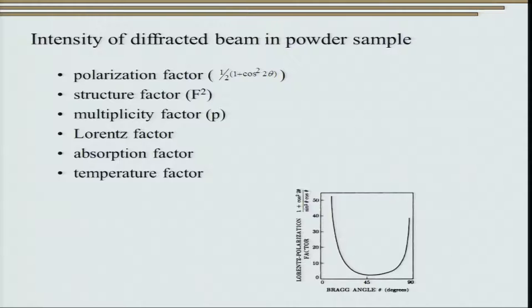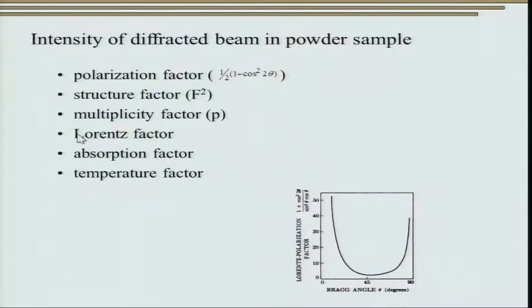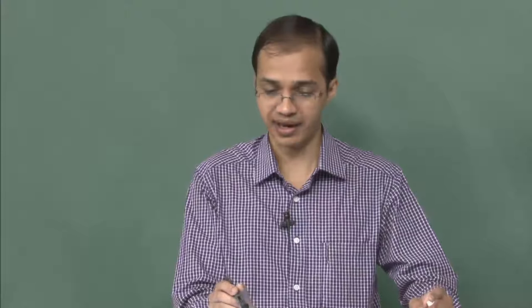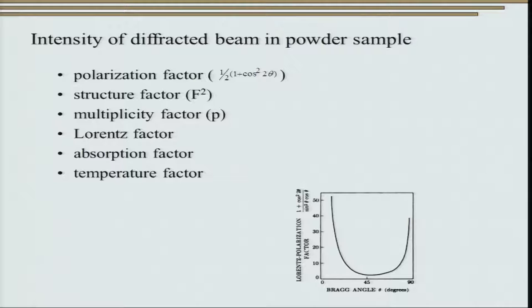Regarding multiplicity, consider the 100 peak and the 111 peak in cubic crystals. The multiplicity of the 100 peak is 6 while that of the 111 peak is 8. Therefore, considering only the multiplicity factor, the ratio of intensity of the 111 peak will be 8/6 times that of the 100 peak. Another important parameter affecting diffraction is the Lorentz factor, which arises because diffraction occurs not only exactly at the Bragg angle but also at angles slightly away from it.